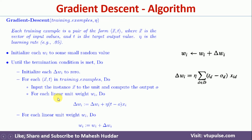The second termination condition may be the number of epochs. For example, if I set the value of epoch equal to 5, these steps will be executed 5 times. After the fifth iteration, whatever value you get for the weights, that will be the final weights. That is how the termination condition will be determined in this particular case.